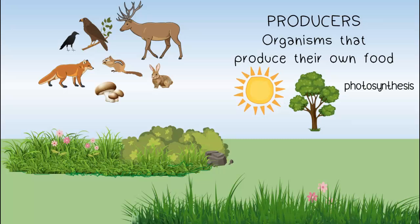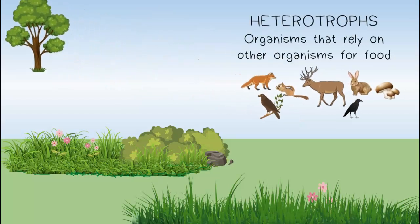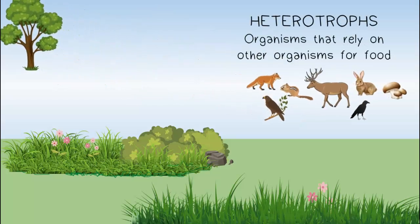All other organisms are classified as heterotrophs. A heterotroph cannot make its own food, so it feeds on others — it is an organism that relies on other organisms for food. Heterotrophs can be classified according to how they obtain their chemical energy, and there are two main categories: consumers and decomposers.